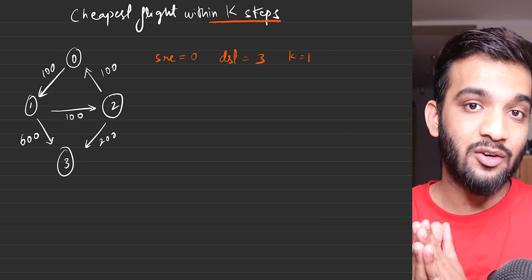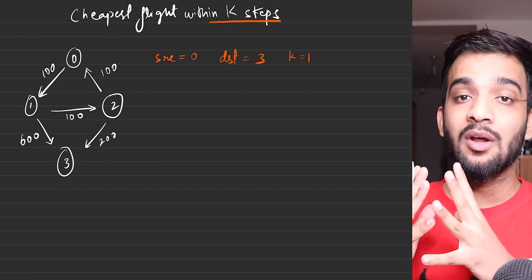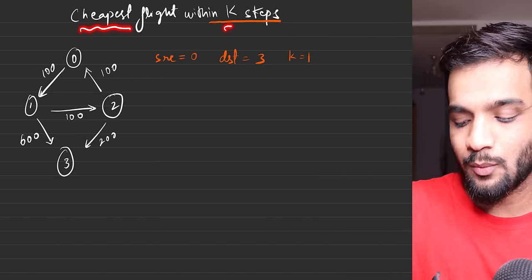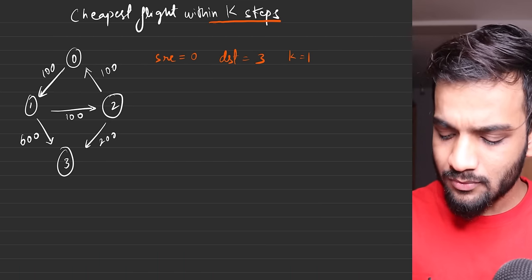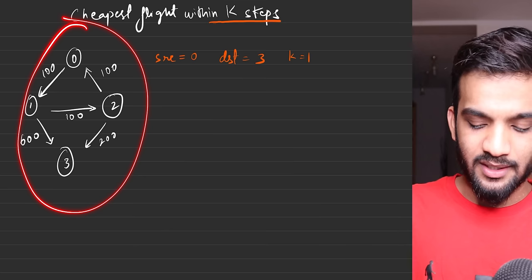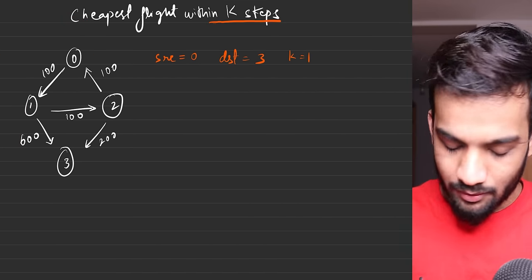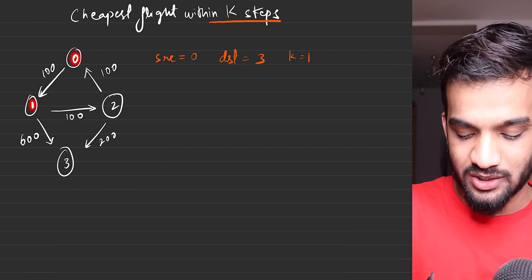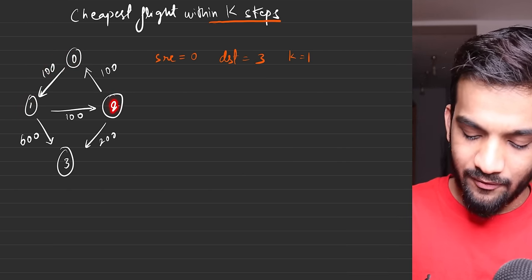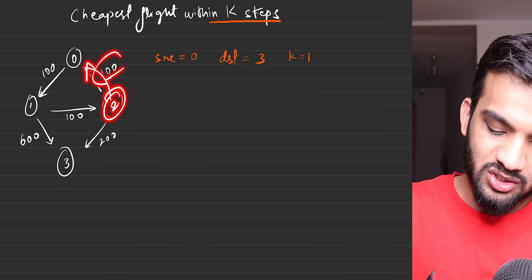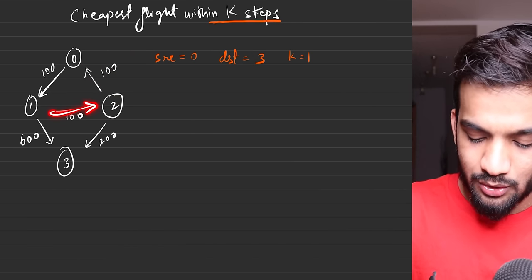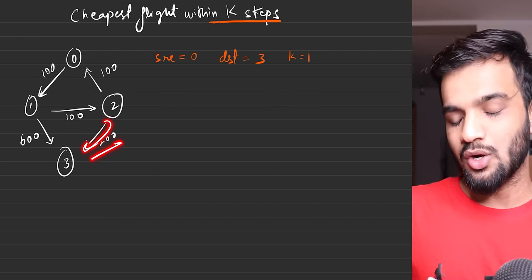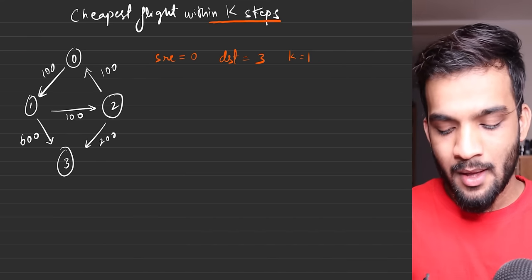This is one of my favorite algorithms because it's implemented at large scale on many websites. So, cheapest flight within K stops — imagine this flight path: flying from city 0 to city 1 costs 100, city 2 to city 0 costs 100, city 1 to city 2 costs 100, city 1 to city 3 costs 600, and city 2 to city 3 costs 200.